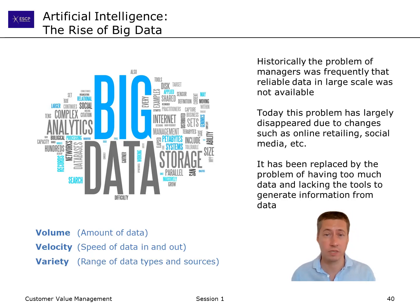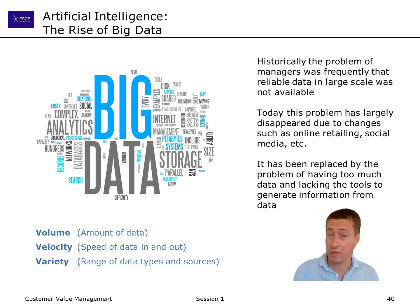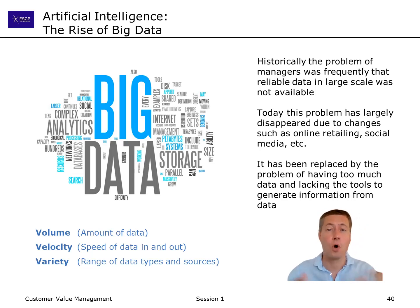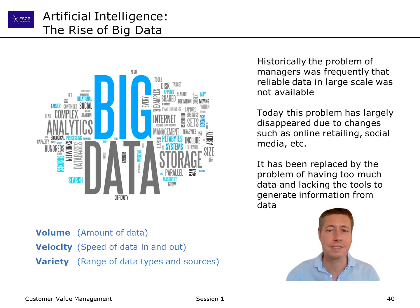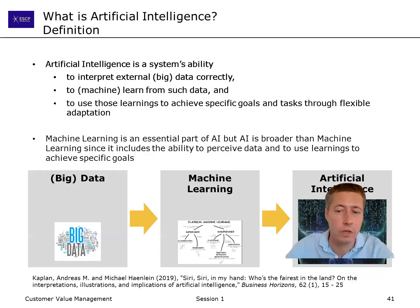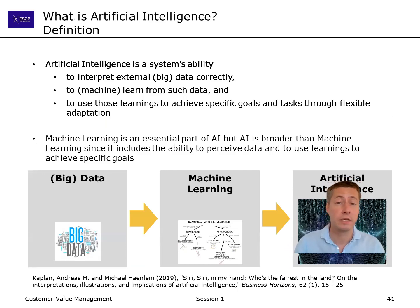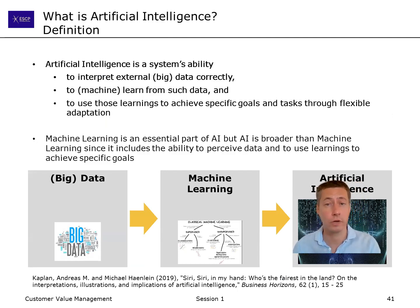Nowadays the world is very different, because the challenge is no longer to take decisions without any data. The challenge is to actually cope with all the data around us. And artificial intelligence is, in its essence, one way of making sense of a lot of big data. If you want to define artificial intelligence: it is the ability to interpret external data, to learn from such data, and to take actions based on those learnings.